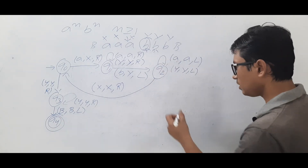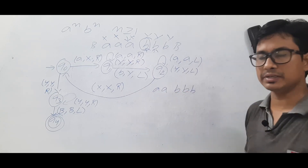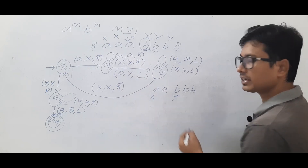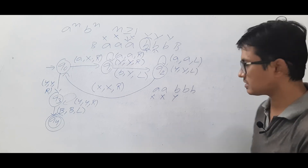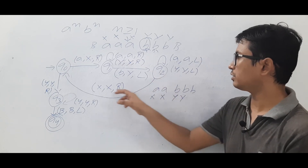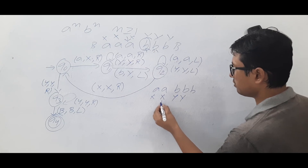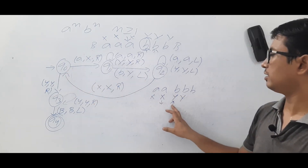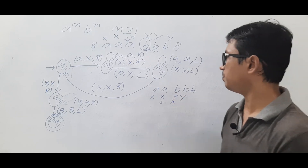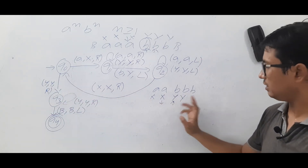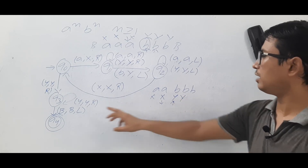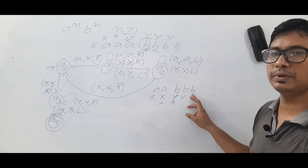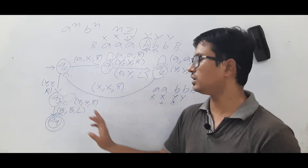Now consider the case where the number of A's is less than the number of B's. We mark A's as X and B's as Y in pairs as before. Eventually, all A's are marked. We return to Q0, see X, move right, and enter Q3. In Q3 we scan through Y's moving right.